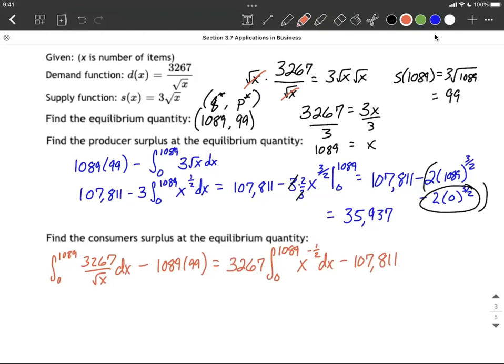Now let's integrate. Alright, so the constant comes along, 3267. Now as we integrate, we're going to increase the exponent by 1, so negative one-half plus 1 makes positive one-half, and then we want to divide by that new exponent. But because it's a fraction, we can multiply by its reciprocal instead. So that's 3267 multiplied by 2. Alright, that gets evaluated between 0 and 1089, and then we subtract away the 107,811.